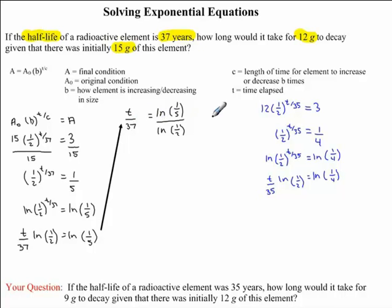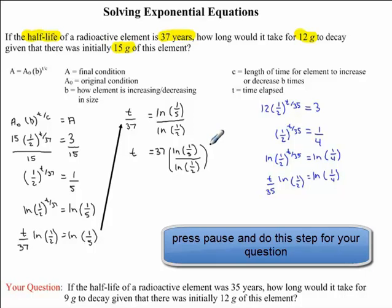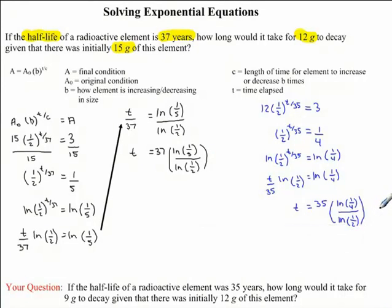Now lastly, we want to get rid of the 37. Since this is division, the opposite is multiplication, so we multiply both sides by 37. The 37s cancel on the left, giving us t = 37 · (ln(1/5) / ln(1/2)). I would now like you to isolate for t in the question you are given.